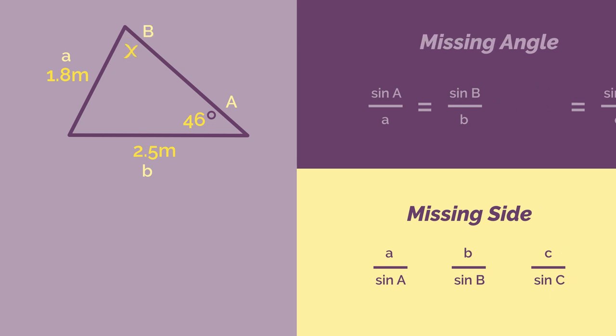Again, just substitute the numbers into the formula and we get sine 46 divided by 1.8 equals sine x divided by 2.5. A little bit of rearranging, so multiply both sides by 2.5 and they cancel out on this side.